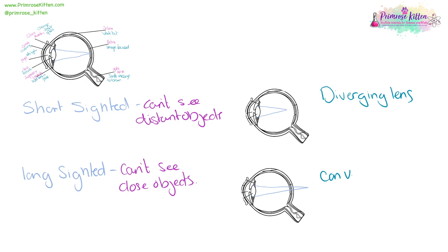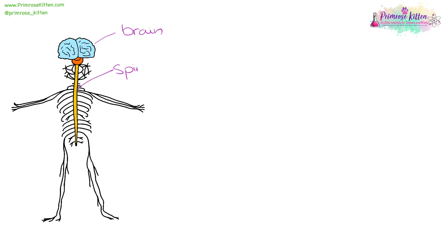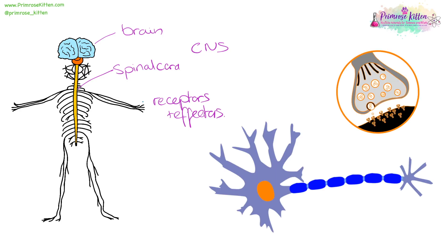The nervous system is incredibly complex and is overlaid on our spinal and muscular system. It consists of the brain and spinal cord, which together make the central nervous system, or CNS. And all the neurons, receptors and effectors. When you pick up stimuli, that signal needs to travel from wherever you picked it up — so your fingers — all the way up to your central nervous system.